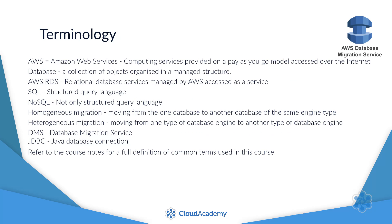Some of the terminology we'll use in this course: When we refer to AWS, we mean Amazon Web Services, which are computing services provided on a pay-as-you-go model accessed over the internet. When we talk about a database, we mean a collection of objects organized in a managed structure. AWS RDS stands for Amazon Web Services Relational Database Services, which are a managed database service provided by Amazon Web Services, accessed from the AWS console. SQL stands for Structured Query Language, and NoSQL stands for Not Only Structured Query Language.